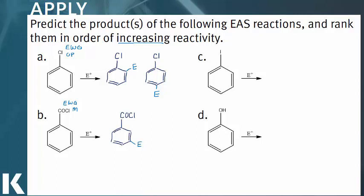Looking at C, we have iodine, which is an electron withdrawing group, and it is an ortho-para director. So we get the addition to those ortho and para positions. And finally in D, we have the OH group, which is an electron donating group, and also an ortho-para director.